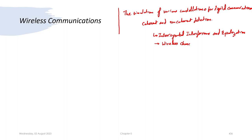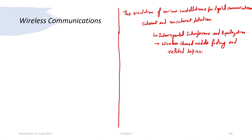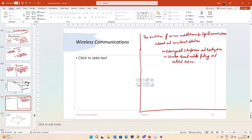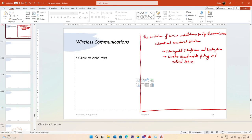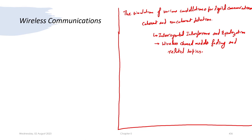5G and 6G wireless communications would include wireless channel models, fading, and related topics. The original plan for this course was to cover all of this, but the eventual pace turned out to be much slower than anticipated. We are reaching the end of this course — maybe another couple of hours of videos left — whereas all the topics stated above are still yet to be covered.